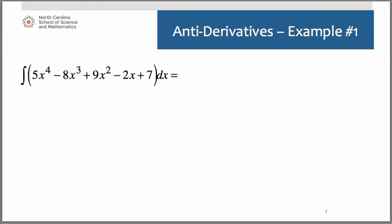Let's take a look at how to evaluate some antiderivatives. Remembering the power rule for integration, we're going to have to take each variable quantity, add 1 to the exponent, and then divide by that new exponent. And we're going to work one term at a time.